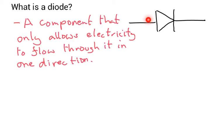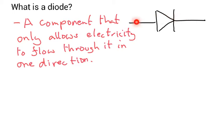If you take a look at the diagram here, this is the symbol for a diode. Can you see how there's an arrow pointing this way? I always tell my students that this is a bit like a wall. So if the conventional current is flowing this way, it's allowed to go through because the arrow is pointing in this direction. If this side is positive and this side is negative, the current will flow through. If it's the other way around, when the electricity goes this way, it'll hit the wall and it won't be allowed to go through.